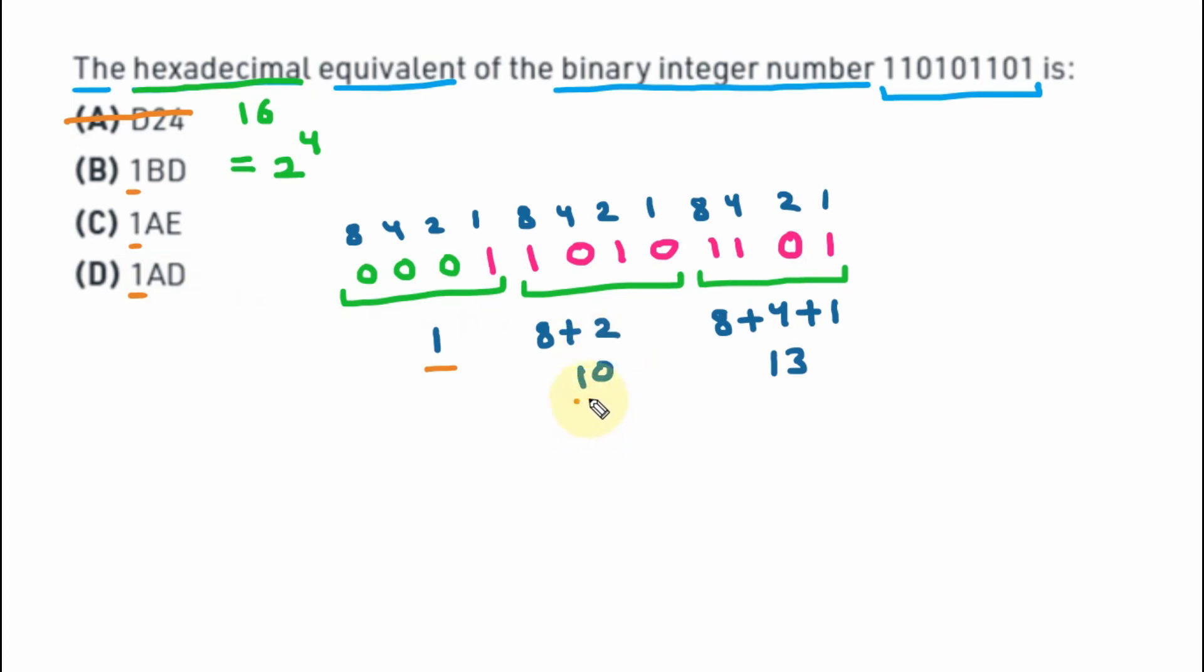Afterward, we have 10. We know that in hexadecimal numbers, we are having 10, 11, 12, 13, 14, and 15. And they are represented by A, B, C, D, E, and F correspondingly. So we can write this 10 as A. So here, we are representing A.